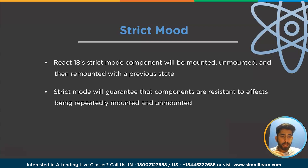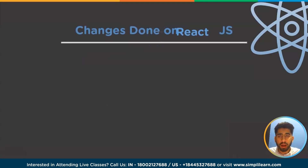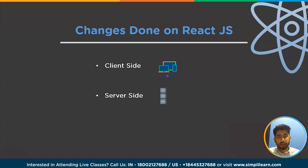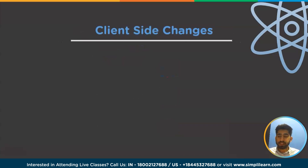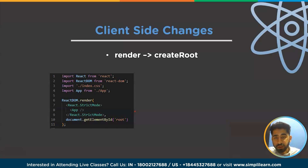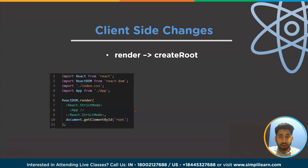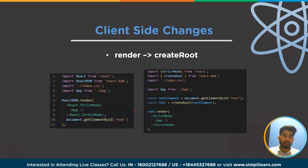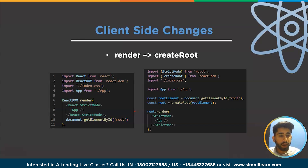Now let's see the changes on the client, server, and library sides in React 18. On the client side, the render is now created using createRoot. In your index.js file, you'll see that we were using ReactDOM.render — but now it is root.render, where you first call createRoot, assign it to const root, and then use root.render.